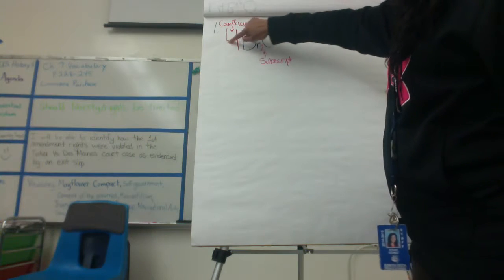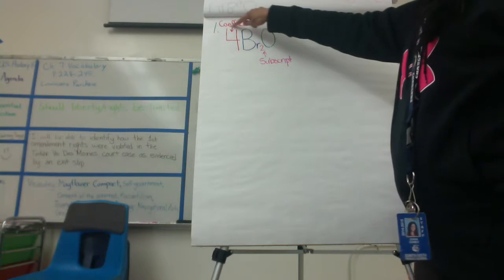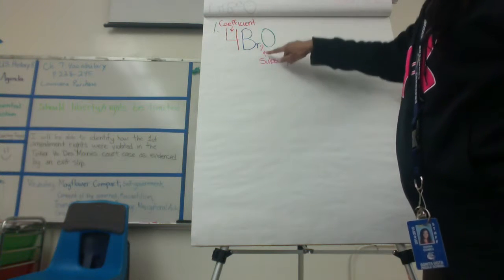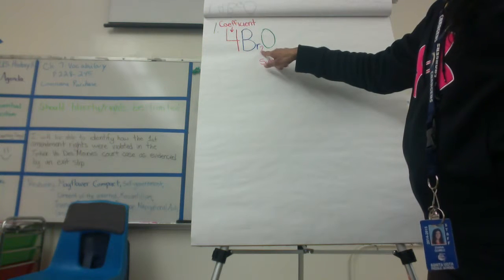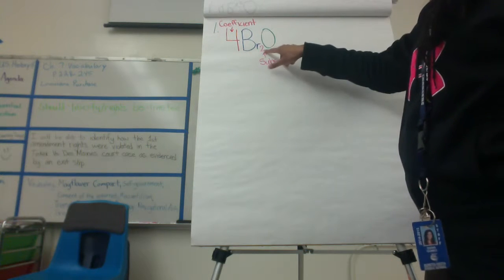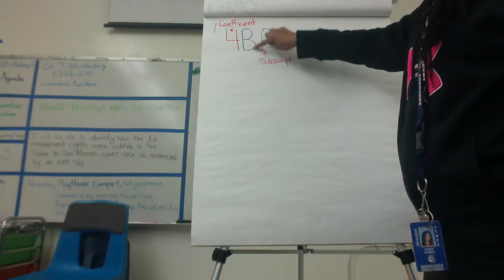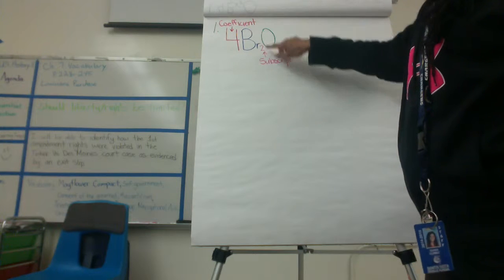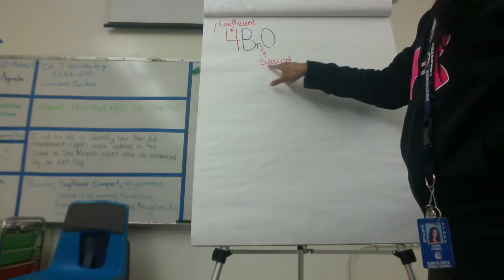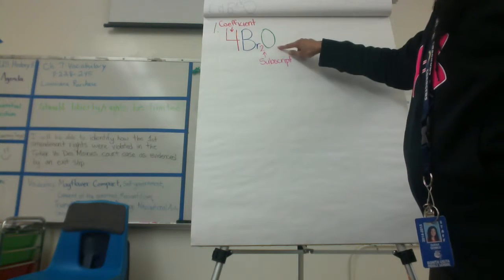The very first number in front of a formula is called the coefficient. When you're dealing with compounds, the number hanging beside the element is called the subscript — it's the number that goes right below the actual element. This element here is Br, which is bromine, and it has a number two right underneath it, so that is called the subscript.